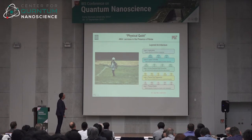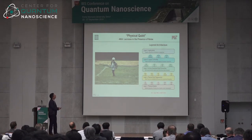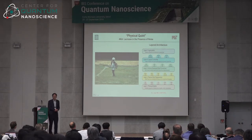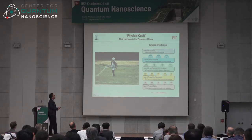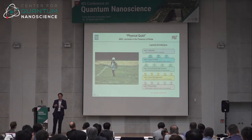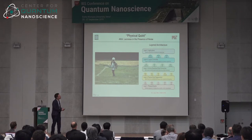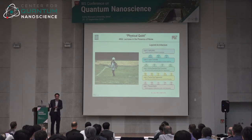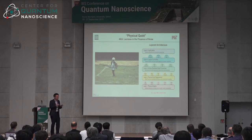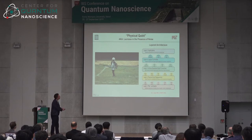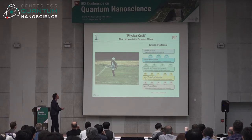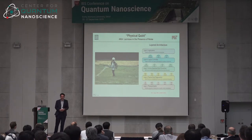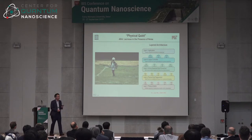Let me briefly describe the architecture of a quantum computer. At the top is the application and user interface where you program and run an algorithm. A logical controller interprets the language and implements gates on the physical qubits. What quantum computers will additionally have are two layers called passive error suppression and active quantum error correction.